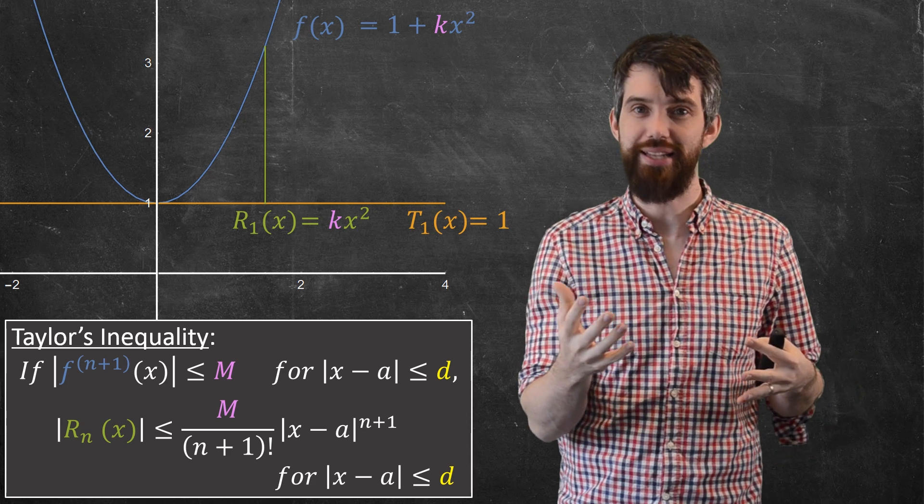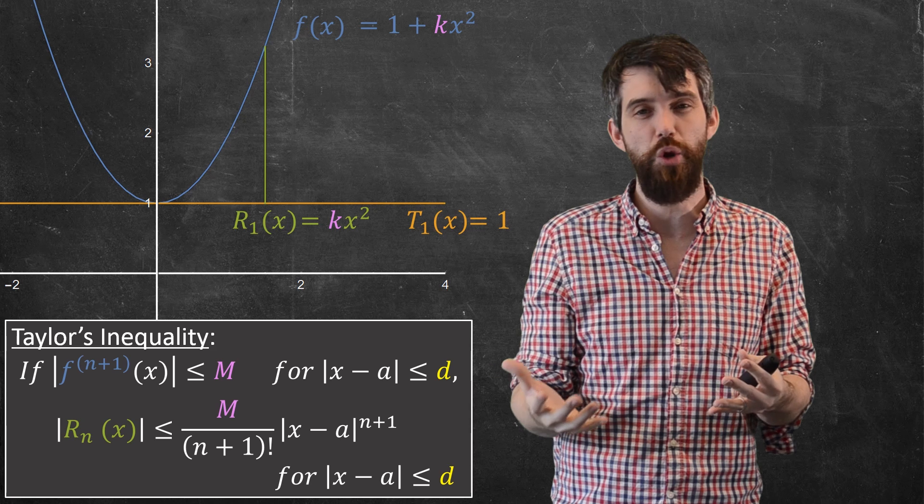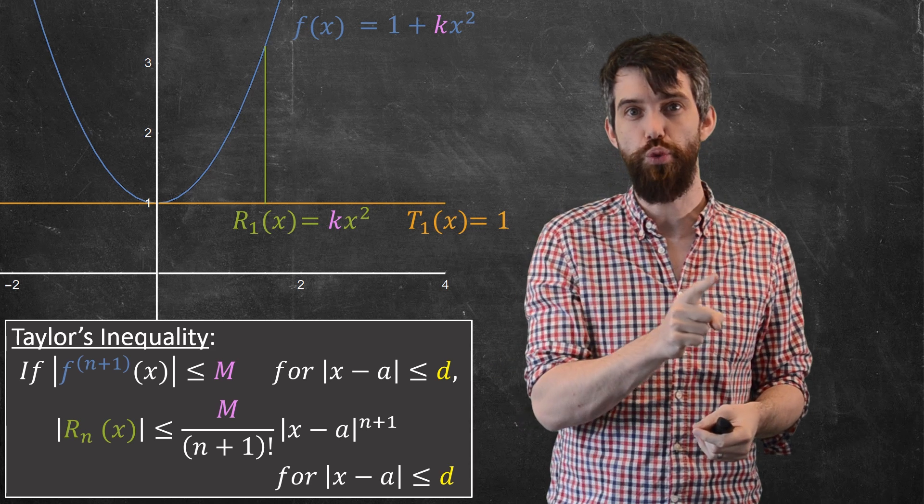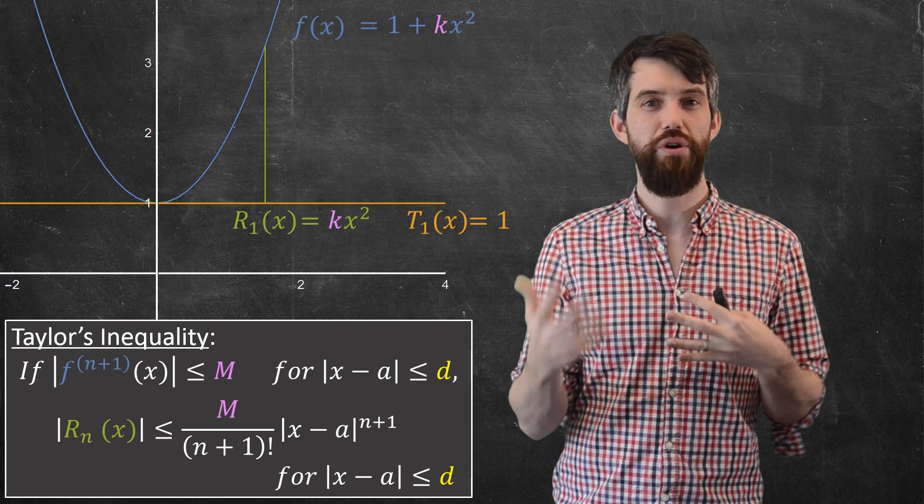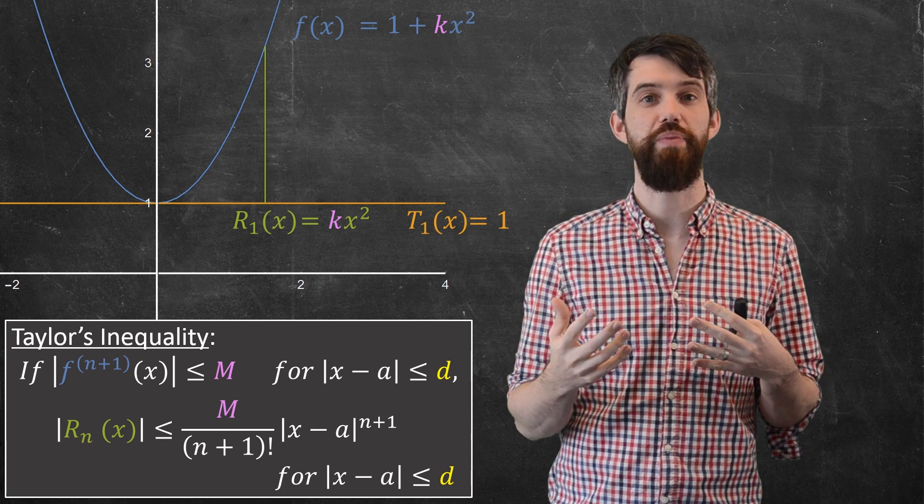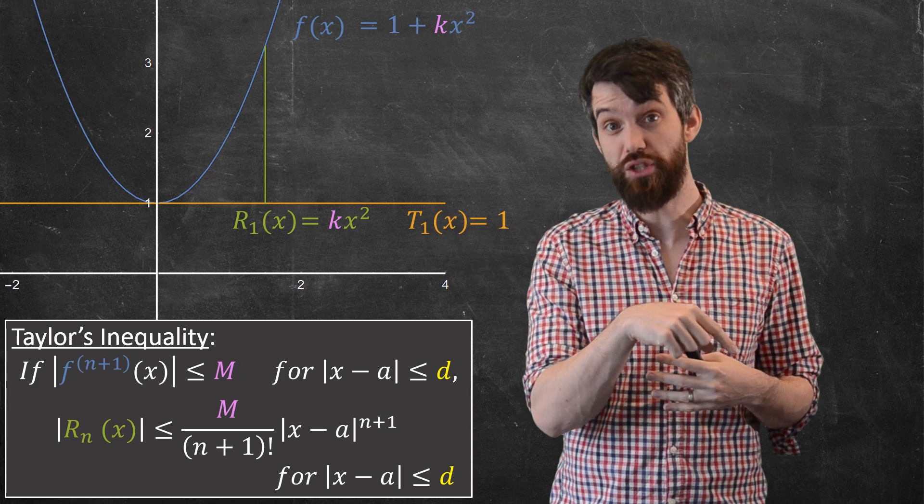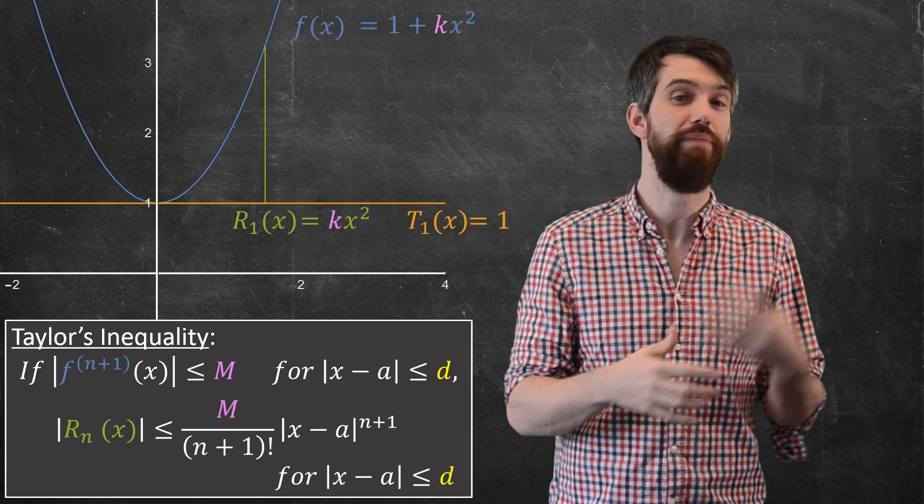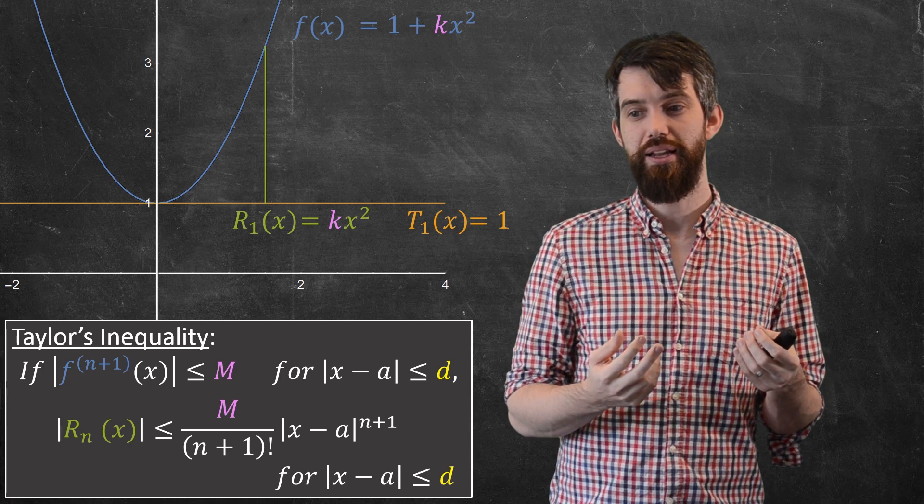So that's the general case. In our specific case here, where we were doing the first Taylor polynomial, that meant that our n was equal to 1. So we were considering 1 plus 1, which was the second derivative. And the second derivative in this example is just going to be twice k. You do one derivative takes the x² down to a 2kx, and then goes away to 2k. So M would be 2k in this particular example.